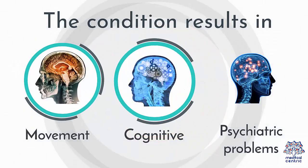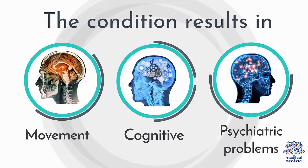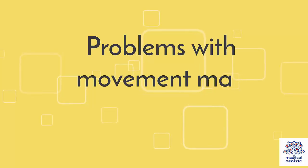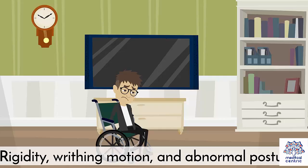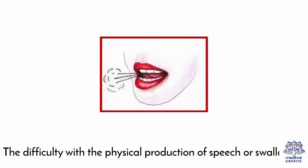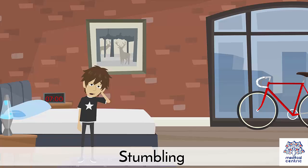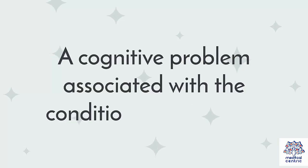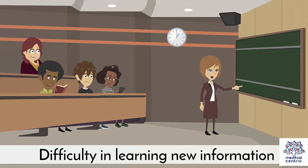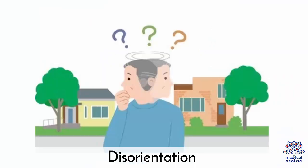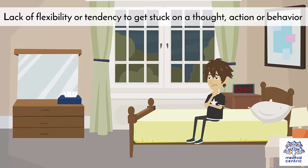Symptoms: The condition results in movement, cognitive, and psychiatric problems. Problems with movement may include jerky, random, and uncontrollable movements called chorea; slow, saccadic eye movement; rigidity, writhing motion, and abnormal posturing; difficulty with the physical production of speech or swallowing; and stumbling. Cognitive problems associated with the condition may include difficulty in learning new information, loss of organizational skills, disorientation, and lack of flexibility or tendency to get stuck on a thought, action, or behavior.